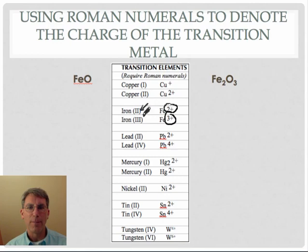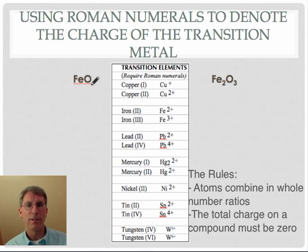And to do that, we use a Roman numeral. The Roman numeral simply tells you what the charge of the iron is. So iron with the Roman numeral two tells you you have a plus two charge, and iron with the Roman numeral three tells you that you have a plus three charge on the iron.